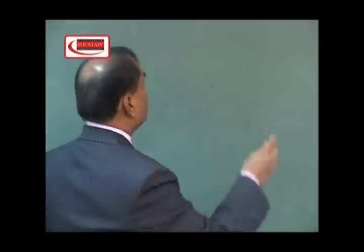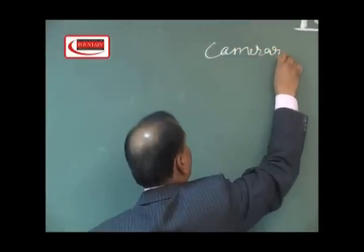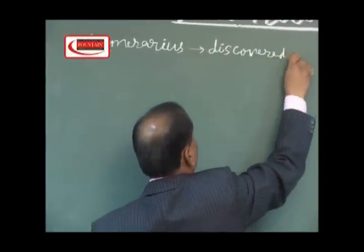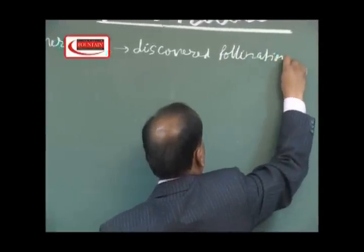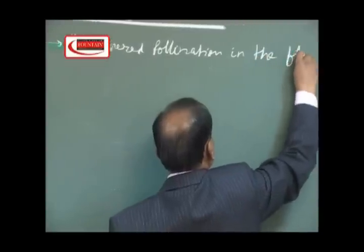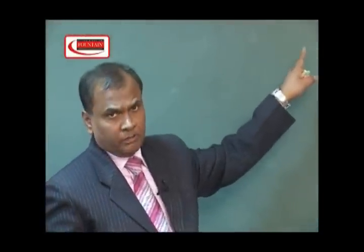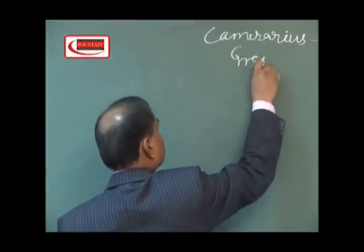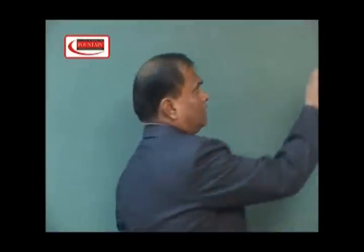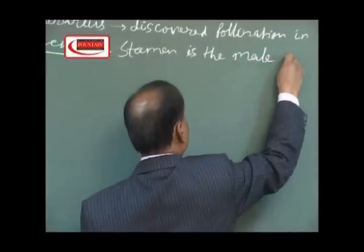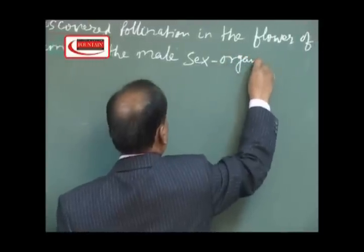First, let me introduce who discovered pollination. Camerarias discovered pollination in the flower of mulberry. The credit for discovery of pollination is given to Camerarias. But actually, Grewe first of all reported that the stamen is the male sex organ of angiosperm flowers.